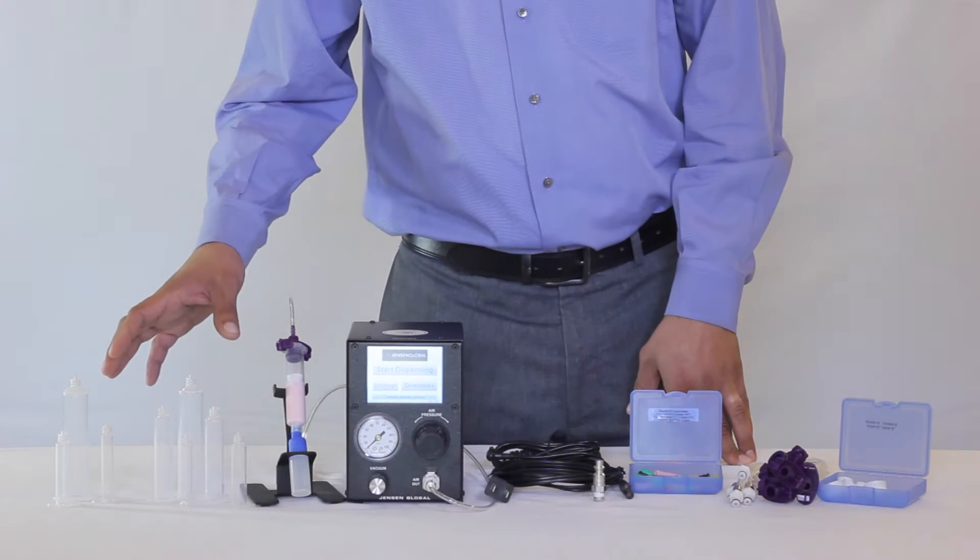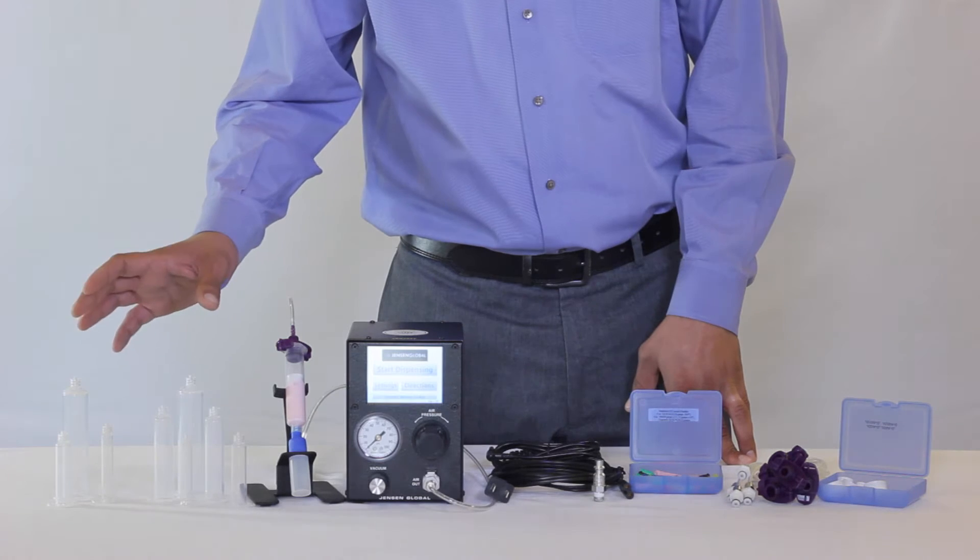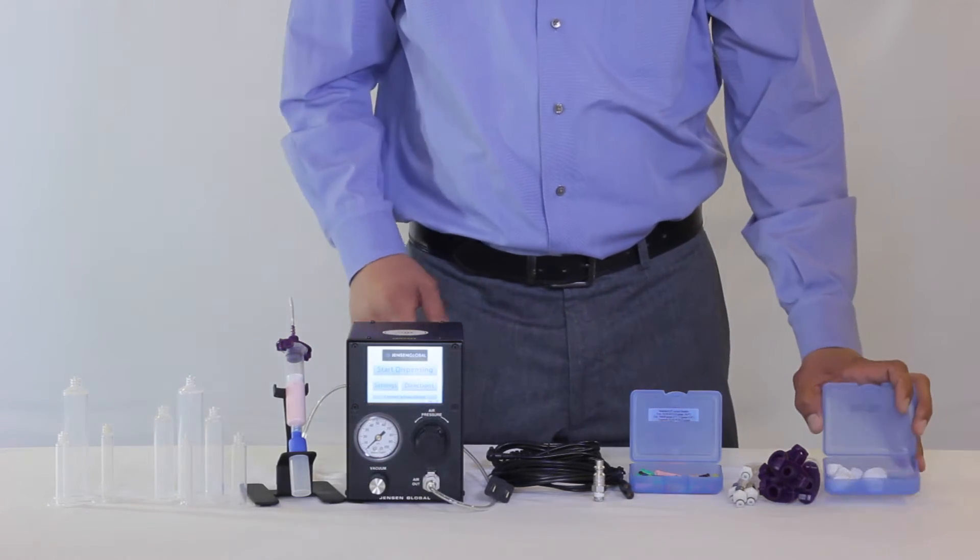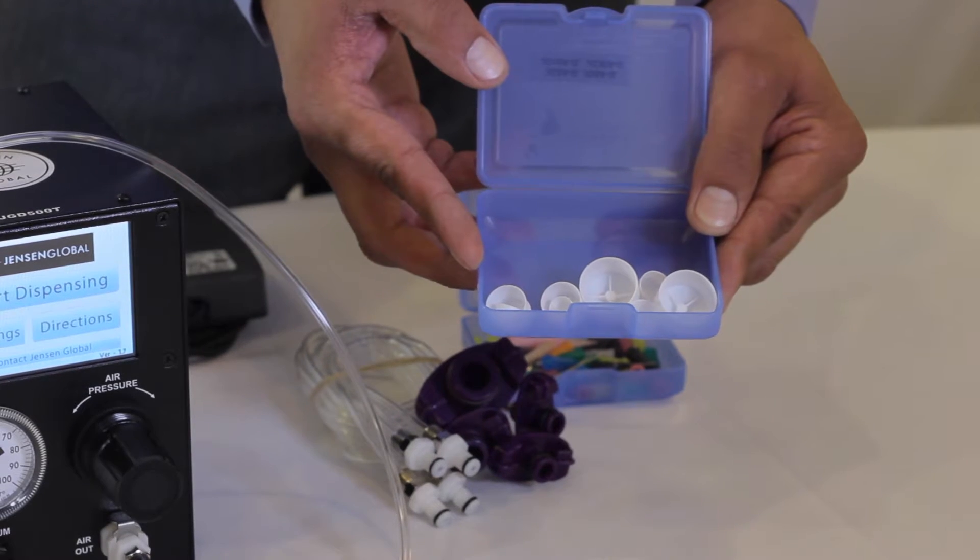Items included with this system are 2 each of our Luer Lock air barrels: 3, 5, 10, and 30cc, and a box that contains the stoppers for the barrels.